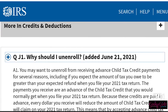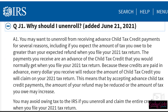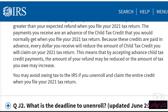Why should I unenroll? According to the IRS, you may want to unenroll from receiving advanced Child Tax Credit payments if you expect the amount of tax you owe to be greater than your expected refund when you file your 2021 tax return. The payments are in advance of the credit you'd normally get when filing. Every dollar you receive reduces the Child Tax Credit you can claim on your 2021 return, meaning your refund may be reduced or the tax you owe may increase. You may avoid owing tax if you unenroll and claim the entire credit when you file.